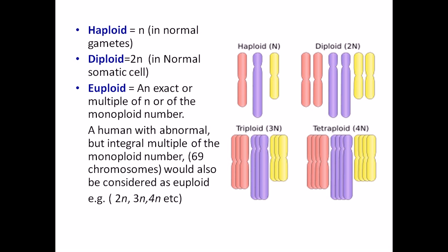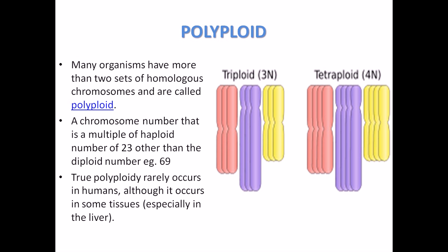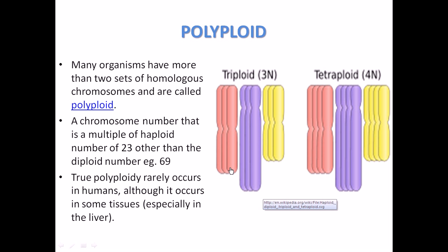The first kind of disorder is polyploidy, where there is an increment in chromosome numbers by set. Many organisms have more than two sets of homologous chromosomes. Normally each set should have two chromosomes — one from the father and one from the mother. If instead of two we have three in a set, that is triploid; four is tetraploid; five is pentaploid, and so on. This is called polyploidy — when the number of chromosomes increases by the set.